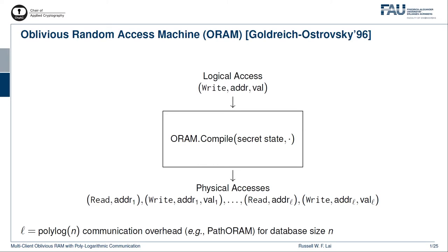Let us start by recalling single-client oblivious random access machine, or ORAM for short. An ORAM can be thought of as a stateful compiler which inputs a logical access instruction and outputs a sequence of physical access instructions of length L. The sequence of physical accesses is functionally equivalent to the logical access, but hides all the information about the logical access. The length L is called the communication overhead of the ORAM. It is well known that an overhead of polylog N, where N is the database size, is both necessary and sufficient.